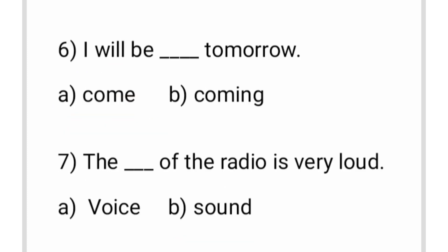The next question is: I will be dash tomorrow. The options are 'I will be come tomorrow' or 'I will be coming tomorrow'. In the sentence, both 'will' and 'be' are present, which indicates future continuous tense. After 'be', we always use verb with -ing (the fourth form of the verb). So 'come' is incorrect; 'coming' is correct. The answer is: 'I will be coming tomorrow'.